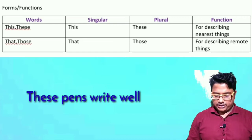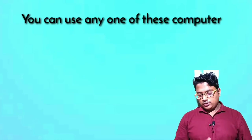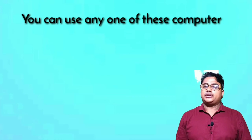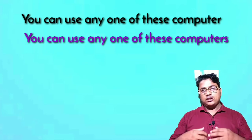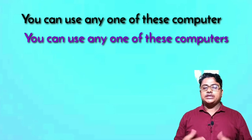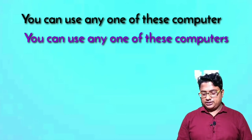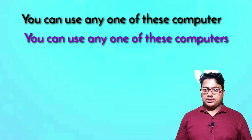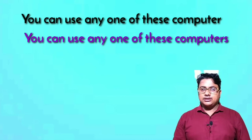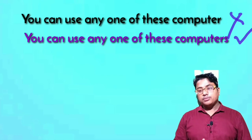Now let's look at a common confusion with these four words. For example: 'You can use any of those computer' — is this correct? Or: 'You can use any one of these computers.' Which sentence is correct? Of course the last sentence is correct, because when we use 'these' and 'those' we use plural nouns. Here 'one of these' is the phrase, so we say 'any one of these computers.'